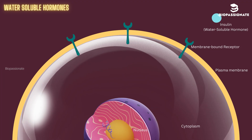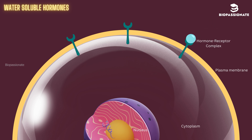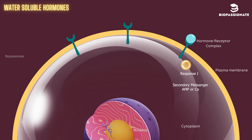Water-soluble hormones such as insulin cannot cross the lipid bilayer of the cell membrane. Instead, they bind to receptors located on the cell surface, triggering a cascade of events inside the cell — a process called signal transduction. In this pathway, the binding of the hormone activates a receptor protein, which triggers the production of second messengers such as cyclic AMP (cAMP). These messengers amplify the signal and activate specific enzymes or proteins within the cell, leading to the desired effect.